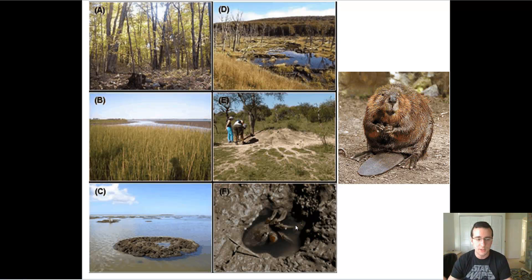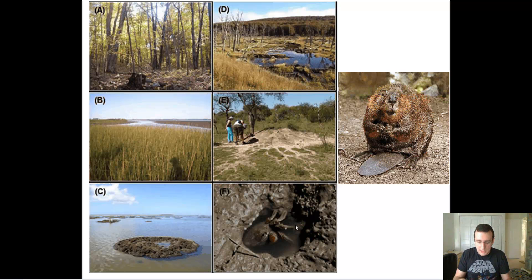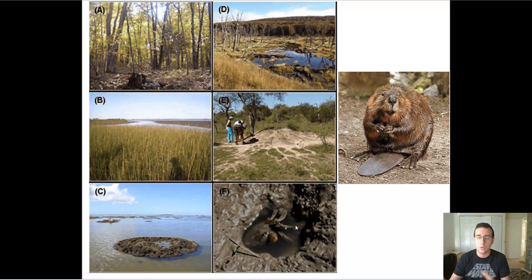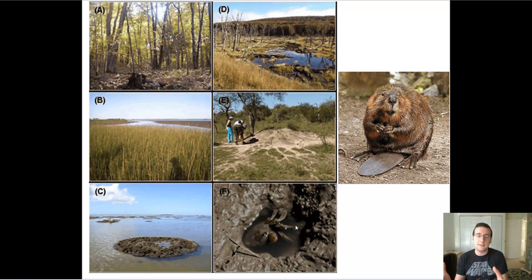Another great example is coral reefs. They actually create ecosystems — when coral dies, it becomes carbon-rich rock, creating islands and reefs. Florida itself is basically fossilized coral rock. So the coral reef is an ecosystem engineer — that ecosystem didn't even exist if it wasn't for coral.